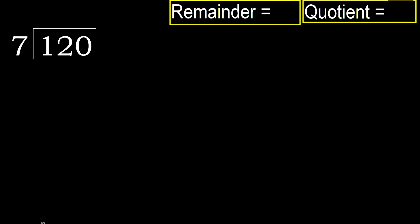120 divided by 7. 1 is less, therefore next. 12 is not less, therefore with 12 — 7 multiplied by which number is nearest to 12 but not greater?